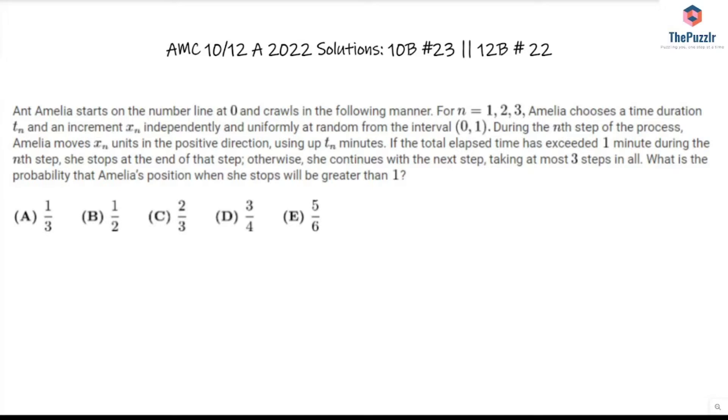So we have an ant that starts on the number line at 0 and for n equals 1, 2, 3 it chooses a time duration tn and an increment xn independently and uniformly at random from the interval from 0 to 1. During the nth step of the process we move xn units in a positive direction using up to tn minutes. If the total lapse time has exceeded one minute during the nth step she stops at the end of that step.